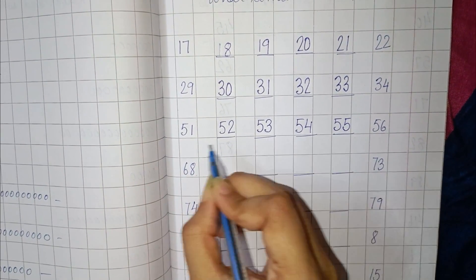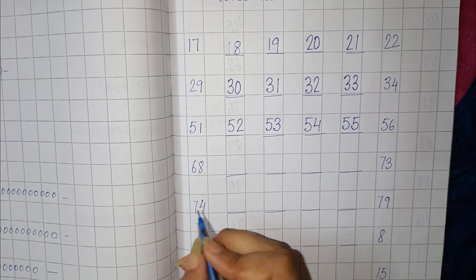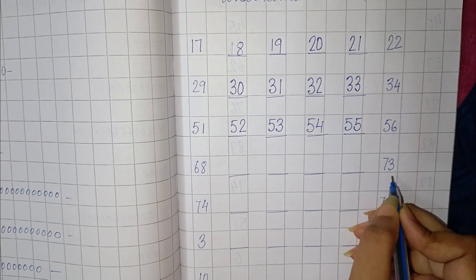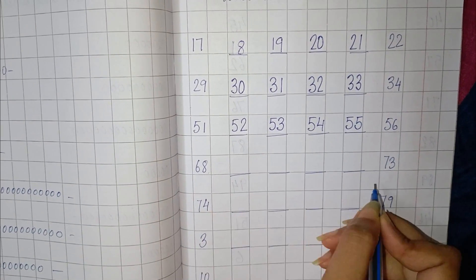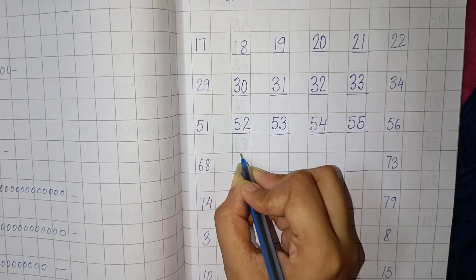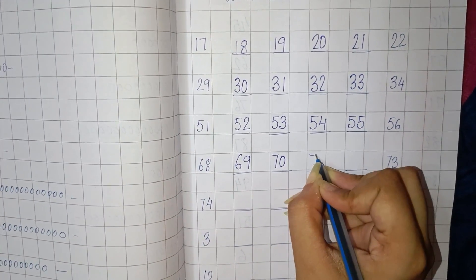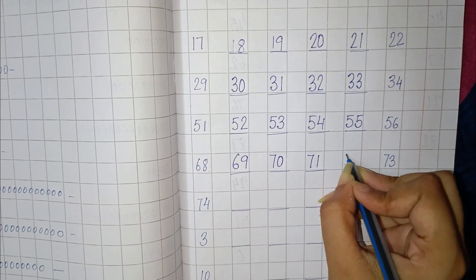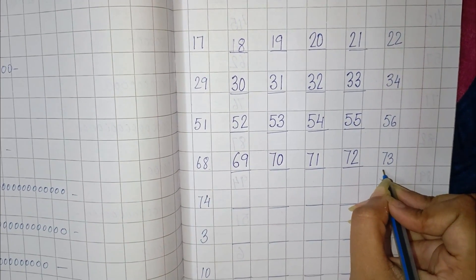So these numbers are between 51 and 56. Now next is 68 and 73. So you will find numbers between 68 and 73. So 68, 69, 70, 71, 72, and 73.